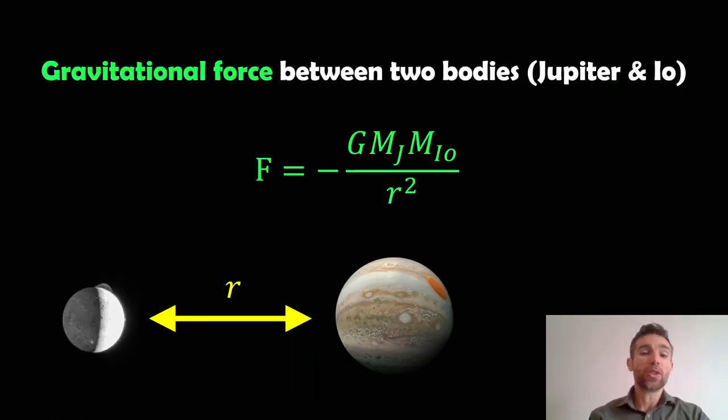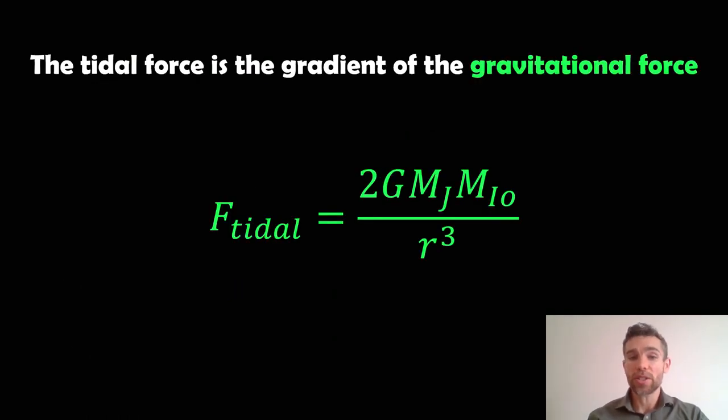So what we need to do first is start with the gravitational force between two massive objects. So we've basically got Jupiter and we've got Io. So Mj will be the mass of Jupiter. Mio is the mass of Io. And then R is the distance separated. So this is the gravitational force between those two objects. Now, the tidal force is the gradient of the gravitational force, which we can write as 2G Mj times Mio over the distance cubed. So that's the tidal force acting on the object.